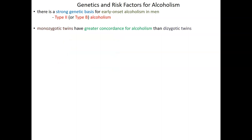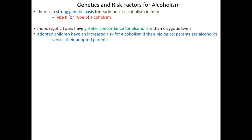Part of how we know there is a genetic component in type B alcoholism is through twin concordance studies: monozygotic twins have a greater concordance for alcoholism than dizygotic twins. Also, adopted children have an increased risk for alcoholism if their biological parents were alcoholics versus their adoptive parents — a classic way to determine nature versus nurture. If environment were causing the drinking, it would be the home and school environment. But we see greater alcoholism, especially type B, correlated with the biological parents who are not even in the picture — showing a genetic predisposition. Of course, environment plays a role too: if a pregnant woman consumes considerable amounts of alcohol, there is a significantly greater chance her child will be an alcoholic when they grow up.